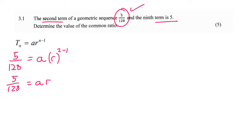They said the ninth term is 5, so we use the same formula. The answer is 5 when we're working with the ninth term, so it's 9 minus 1. There we go, two equations, two unknowns.